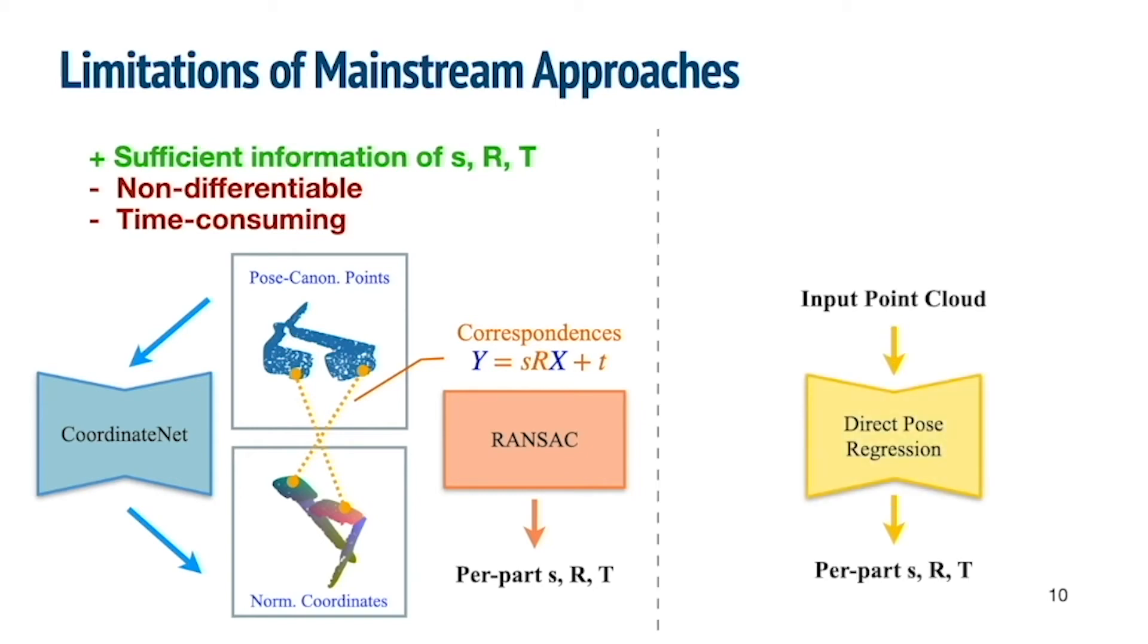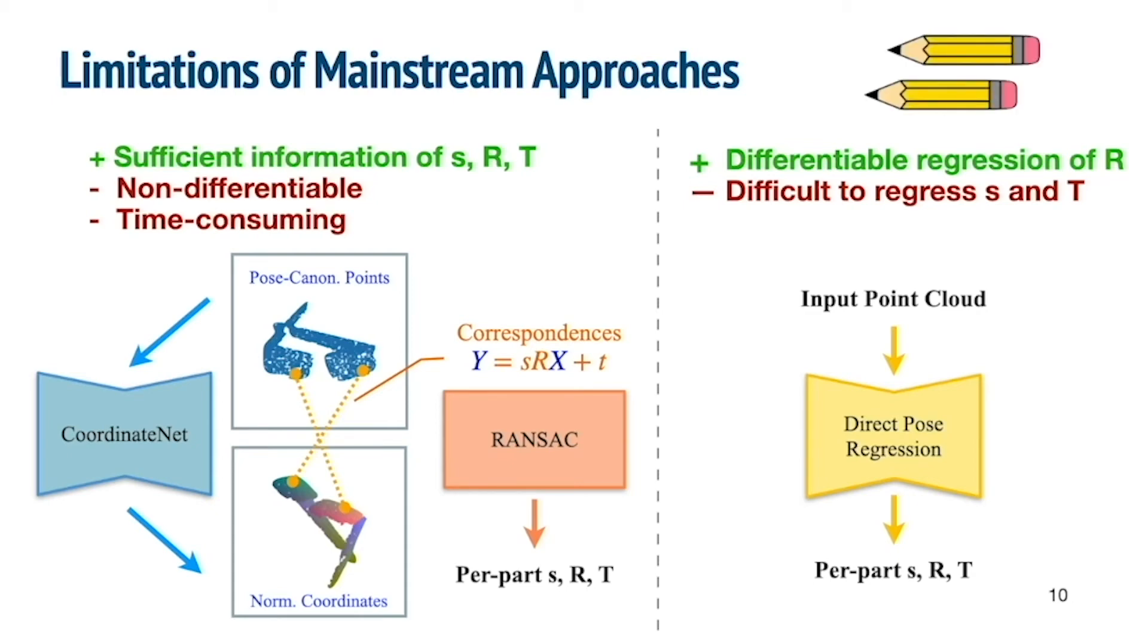Another way is to directly regress per-part poses. However, this approach can't regress scale and translation accurately due to ambiguity caused by occlusions. For example, for these pencils, it's hard to directly regress their centers when their two ends are occluded.